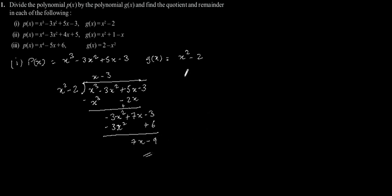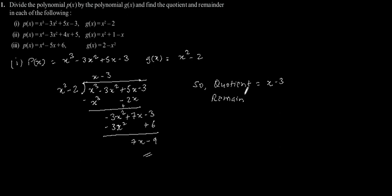So our quotient is x minus 3 and remainder is equal to 7x minus 9. Now the second one.